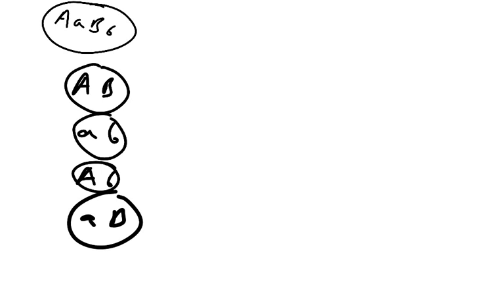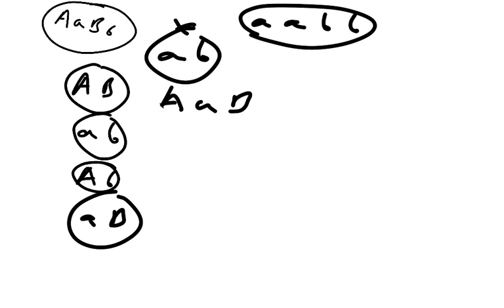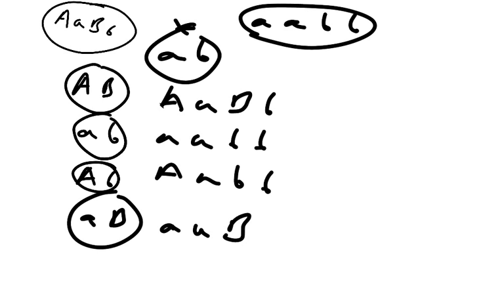If we then cross those gametes with a recessive homozygote — so crossing that heterozygote with a recessive homozygote — it's going to produce offspring that are phenotypically: dominant A dominant B, recessive A recessive B, dominant A recessive B, and recessive A dominant B. Because we've crossed a heterozygote with a recessive homozygote, we produce a one-to-one-to-one-to-one ratio of the phenotype.